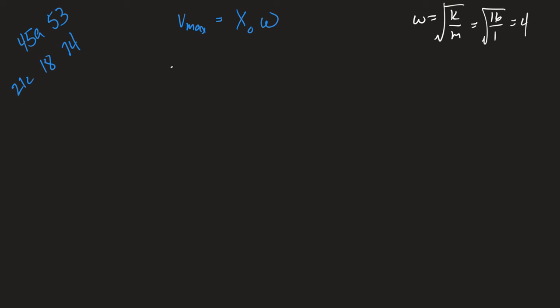So v max is 0.4 meters per second and that equals x naught times 4. So x naught must be, 4 is in radians per second. The radians cancels out and this will give me meters. So 0.1 meters.